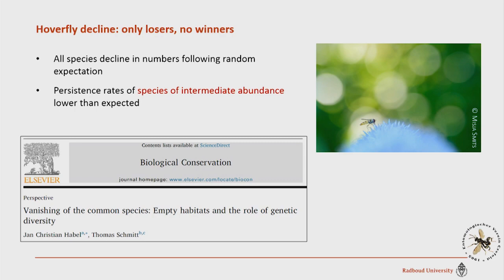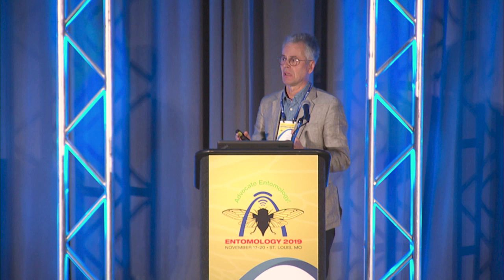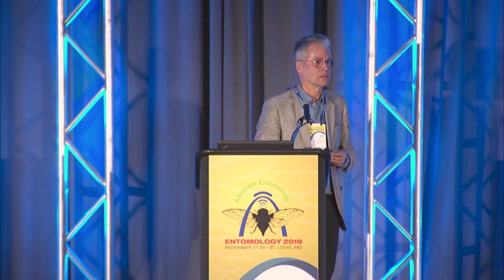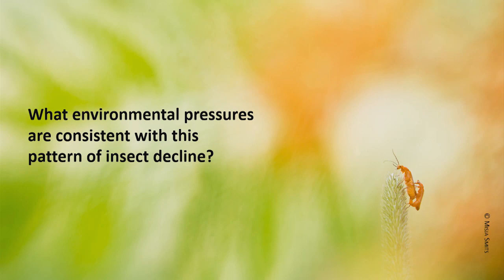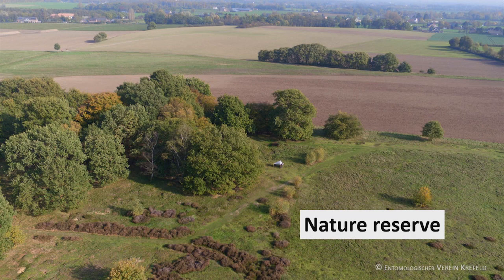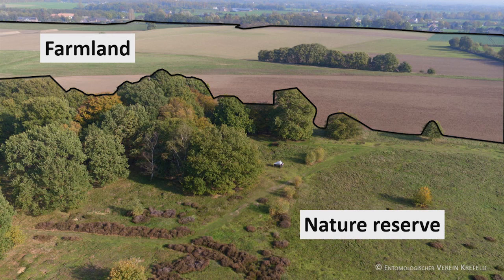This is really weird. Normally, with any environmental pressure on a system, you see many vulnerable rare species going down, but there are a few winners — species that profit from the new circumstances. It seems that's not the case here. The whole community is going down. What environmental pressures could be responsible? Nature reserves have a very sharp boundary, but insects can fly around and influences are all over the place in relation to the farmland that surrounds them.